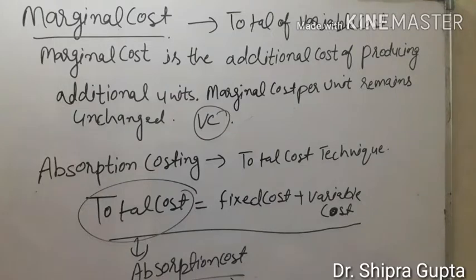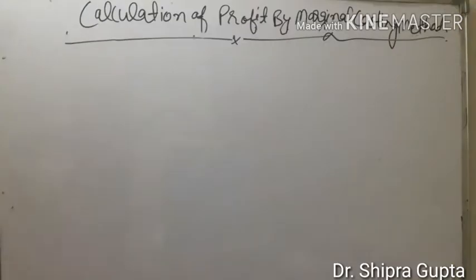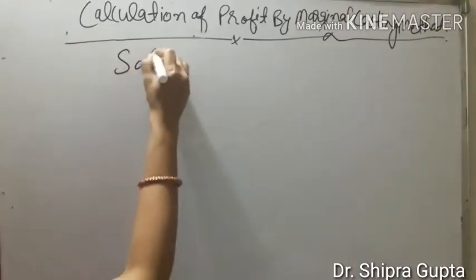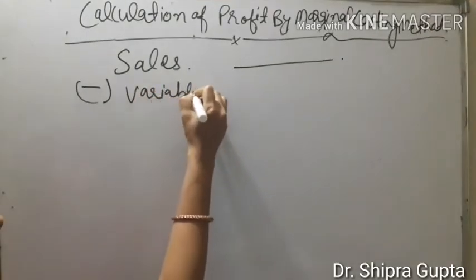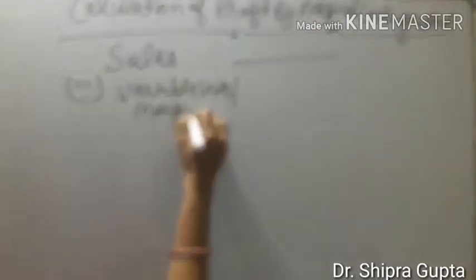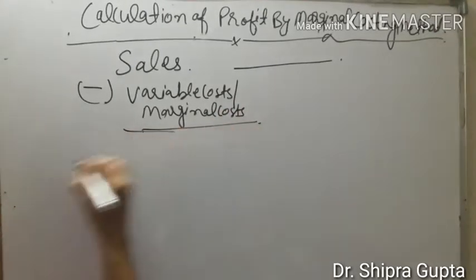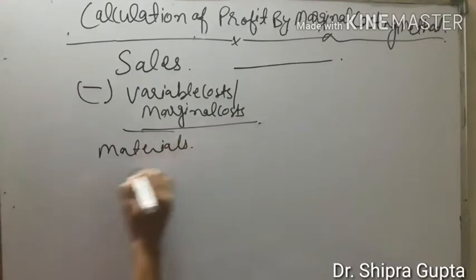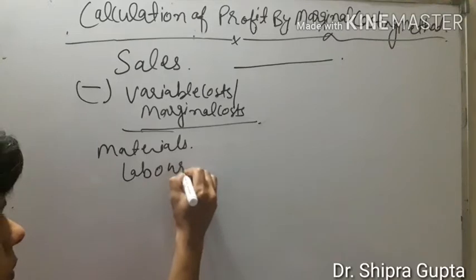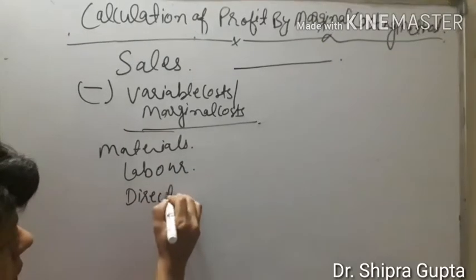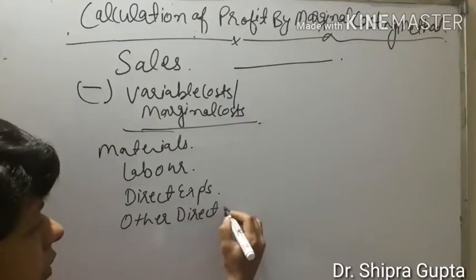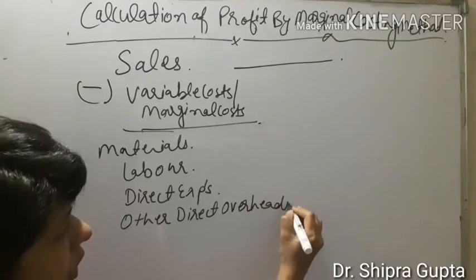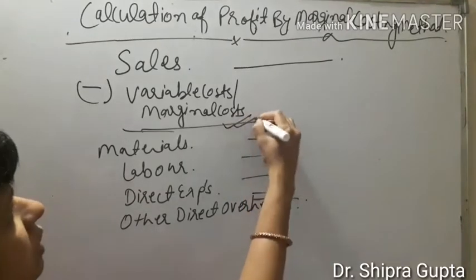Now we will know how profit is calculated in marginal costing and absorption costing. In the marginal costing method, first we take sales, then sales minus variable cost or marginal cost. In marginal cost we include materials, labor, direct expenses, and other direct overheads.